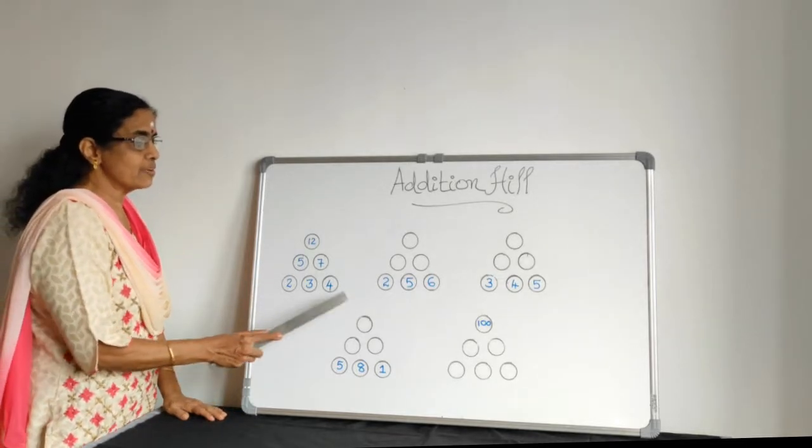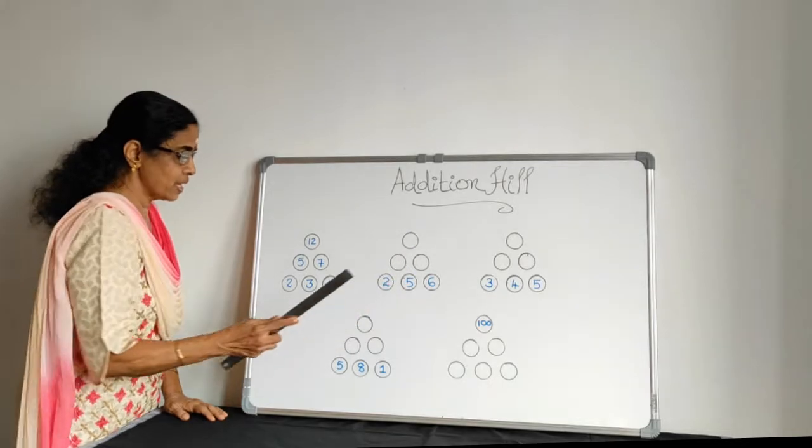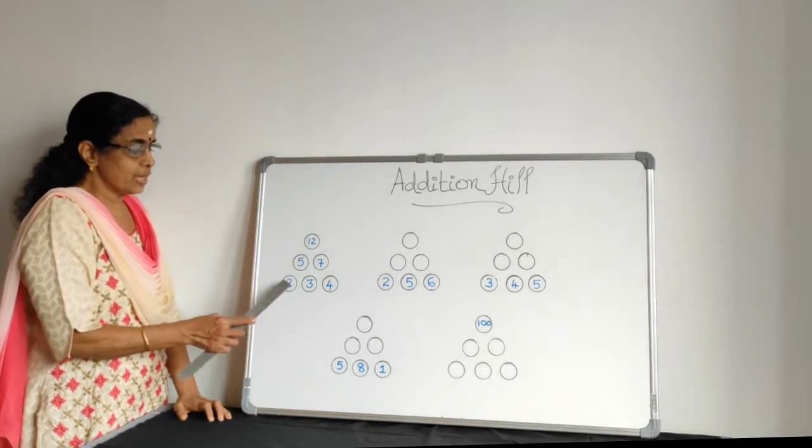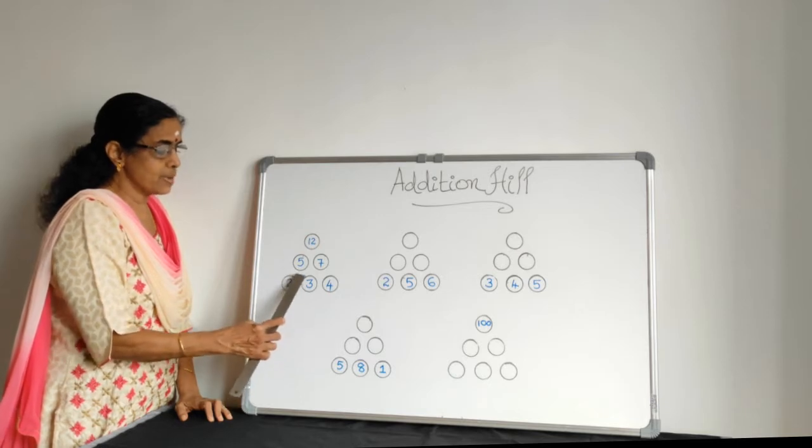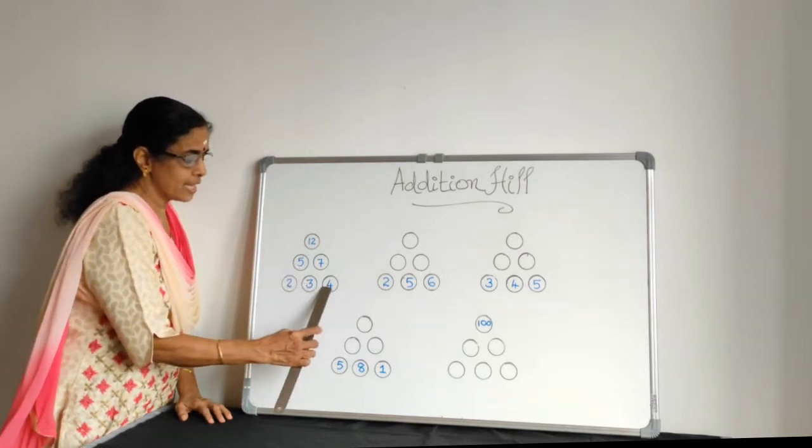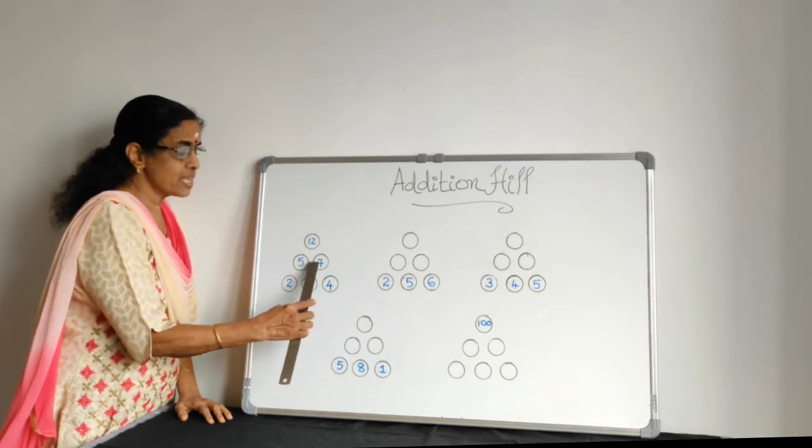The first row will be given like this. Here we have to add the first 2 circles. 2 plus 3 makes 5. Again you have to add like this. 3 plus 4 makes 7.